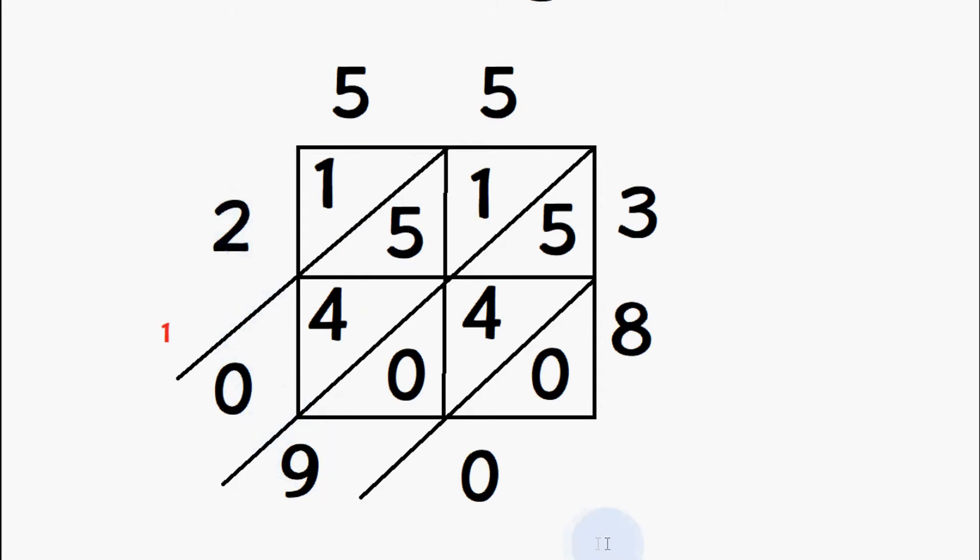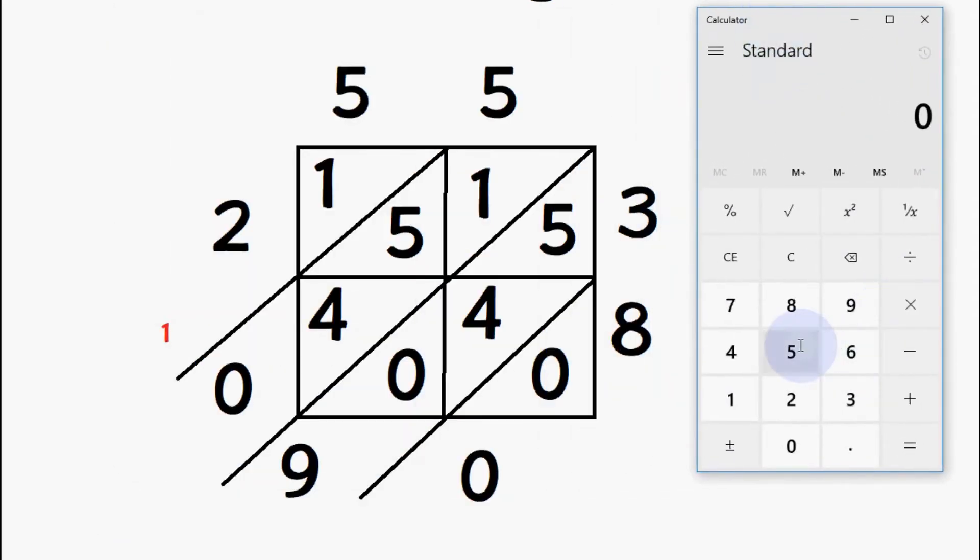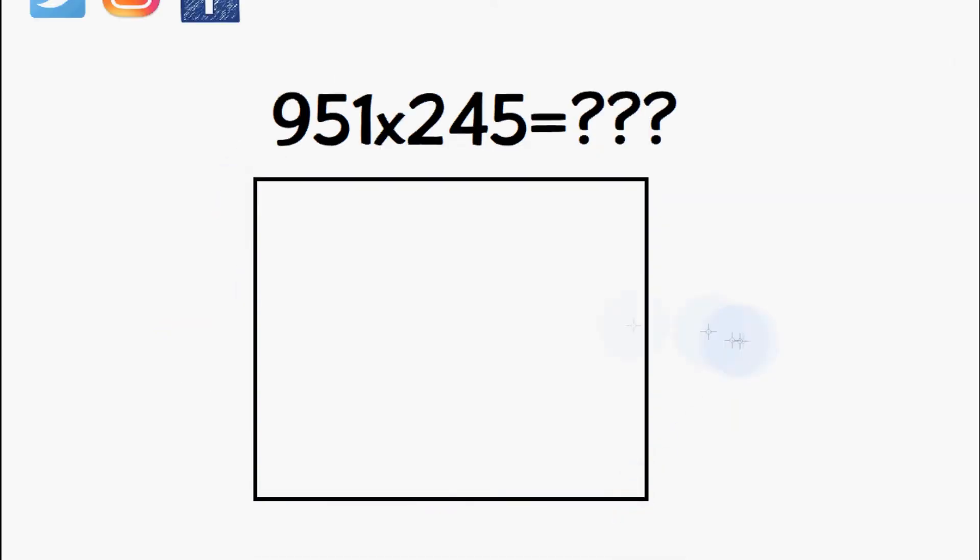So now you can see we have 2090 at the bottom, and this is basically our answer. So let's take this calculator here and work out what 55 times 38 is, and the answer is 2090, so this method basically works. Let's try another example.